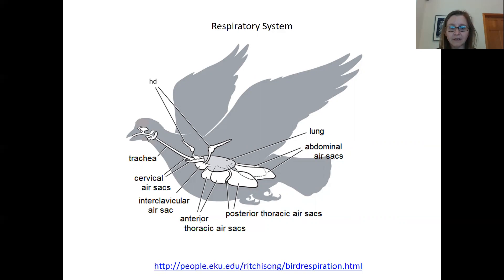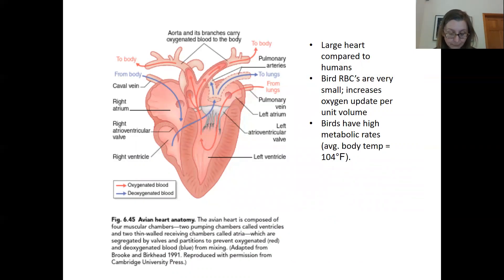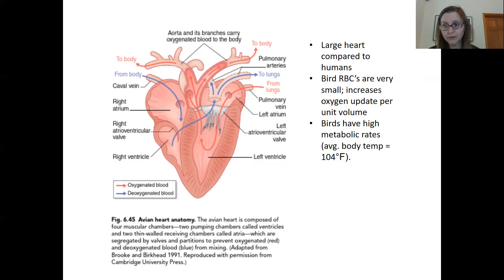Here's another depiction of the air sac system in birds. In the circulatory system, birds have really large hearts relative to body size. The heart of a human is about 0.4% of their body weight, while a sparrow's heart comprises about 1.7% of their body weight, and 2.4% in hummingbirds. This large heart is responsible for fueling the high metabolic demands that require high oxygen uptake for flight.